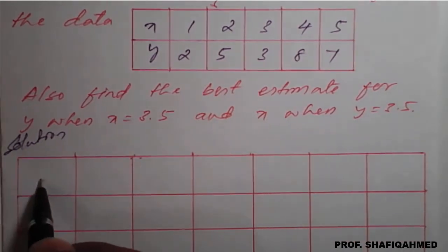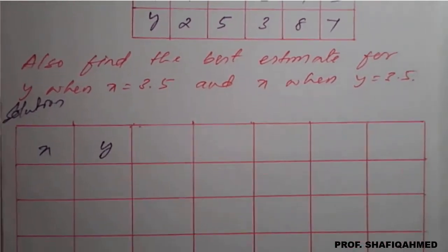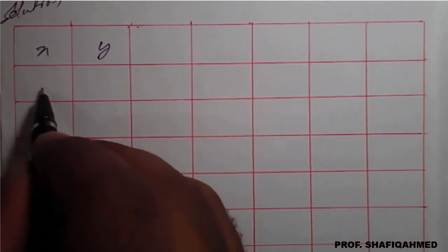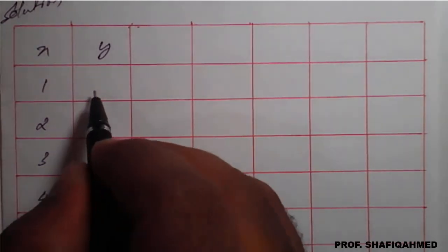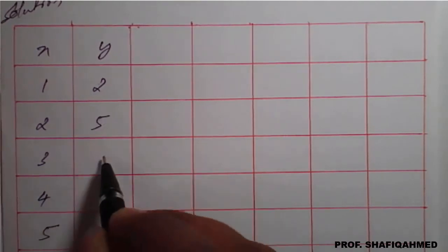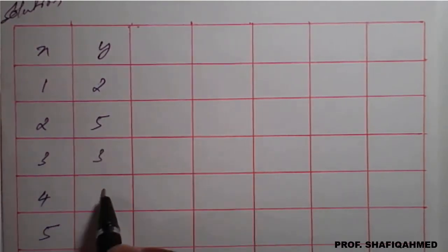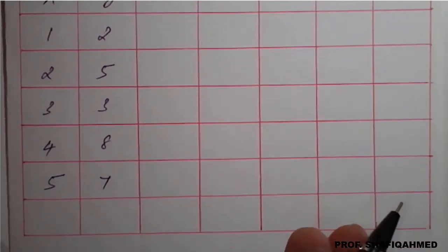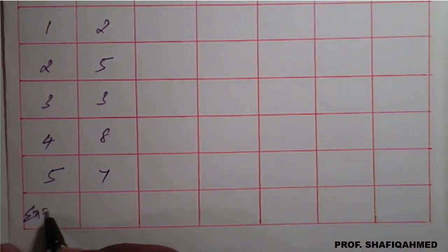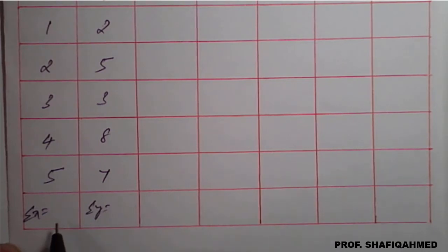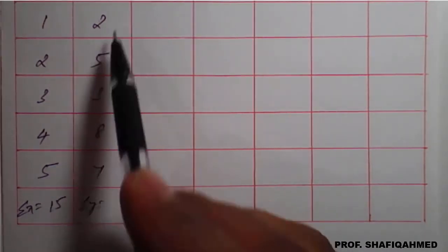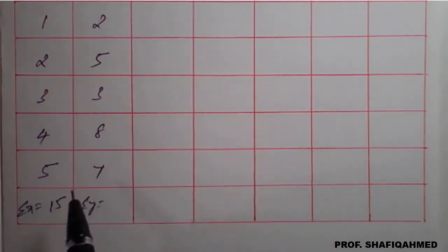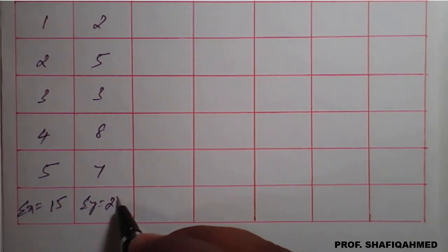We have to write the values of X and Y. X data is 1, 2, 3, 4, and 5. Y data as per the question is 2, 5, 3, 8, 7. Then we need to check: summation of X is 15 and summation of Y, adding all values, is 25.